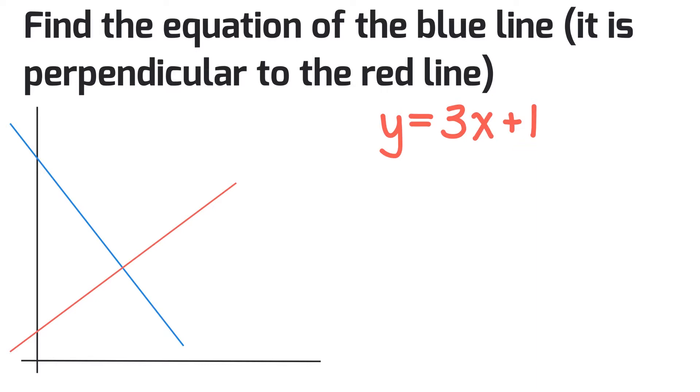This tells us a couple things. First, we know that the slope of the red line, m, equals 3 because that's what's in the equation. We also know that the y-intercept b equals 1.